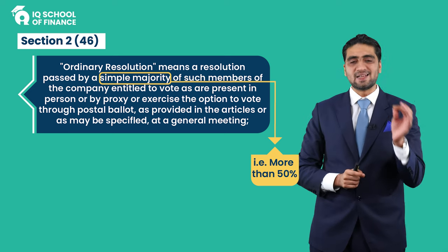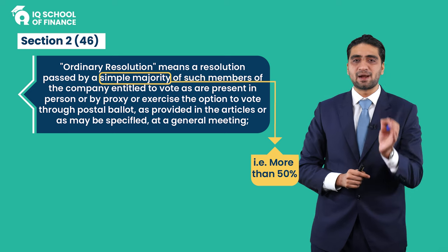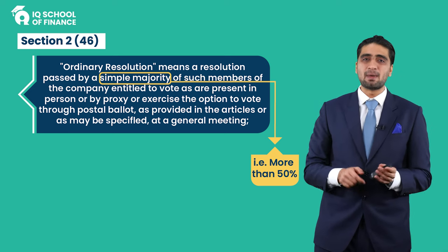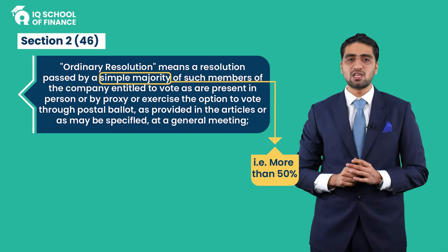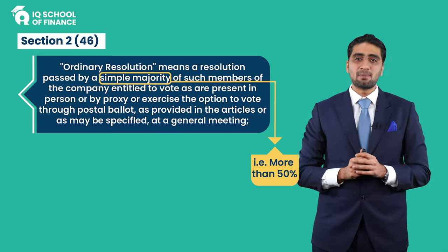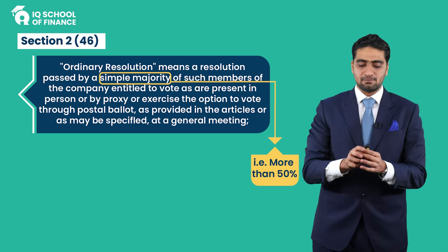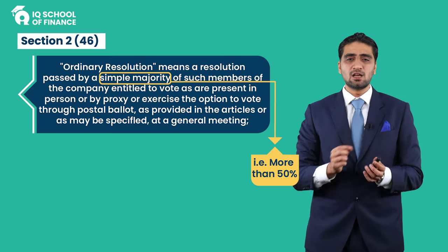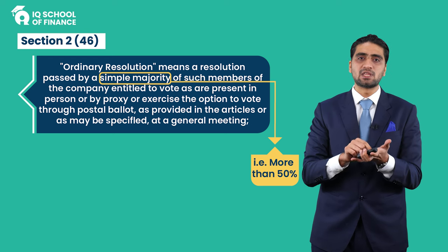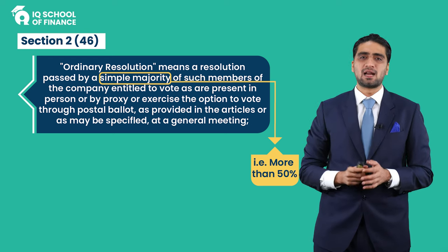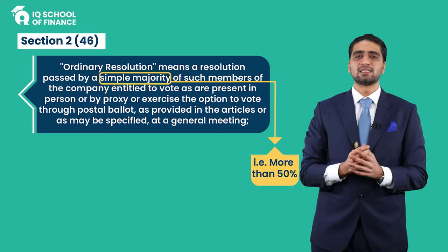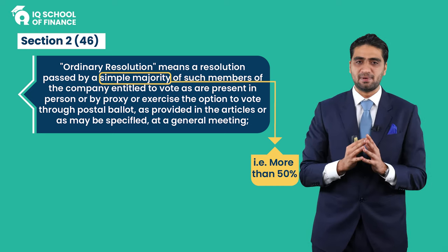Members entitled to vote may be present in person. If the member is not available, then the member sends a proxy — someone goes in their place. If the member cannot go personally or send a proxy, they can vote through postal ballot — the company puts a required time window for this, which we will read about in the meeting section — as provided in the articles or as may be specified at a general meeting.